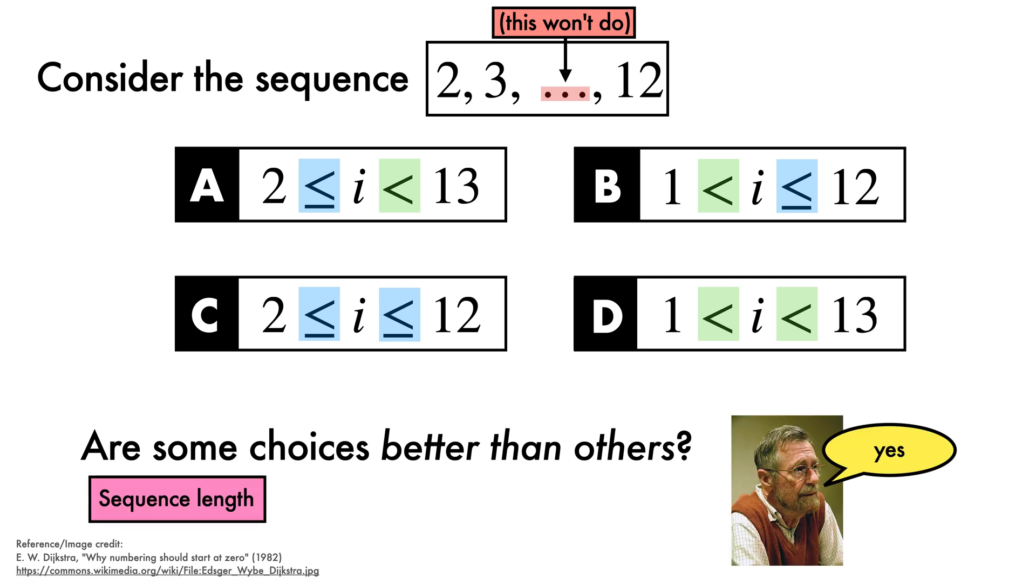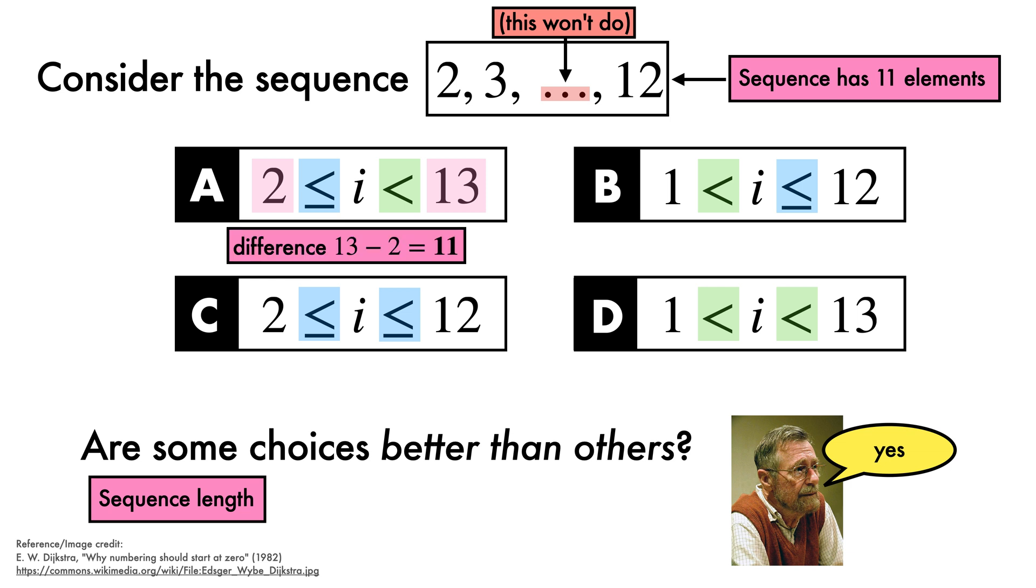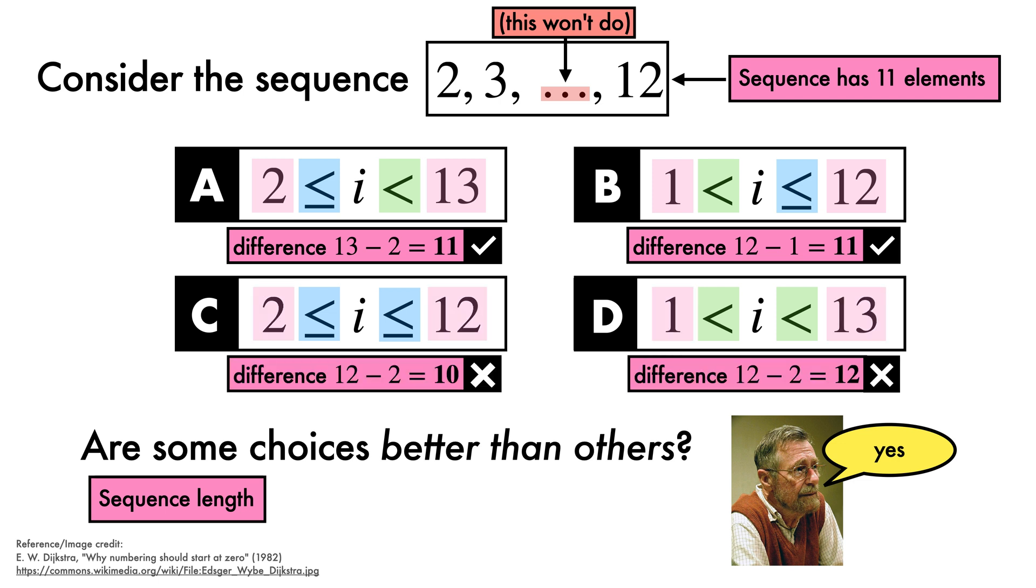First, look at sequence length. Our sequence has 11 elements. If we look at the bounds of option A, we see that it runs from 2 up to 13. The difference in bounds is therefore 11. That's nice, because it matches the number of elements in our sequence. The same is true for option B, but it is not true for option C or D. Therefore, A and B are superior to C and D.